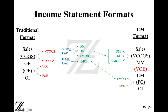Variable manufacturing cost includes direct material, direct labor, and variable manufacturing overhead. These are variable because the more units you produce and sell, the more material you use and the more it costs. The more labor you use, the more the cost. Variable overhead like utilities and electricity also increases with production. That's why these are known as variable manufacturing costs.